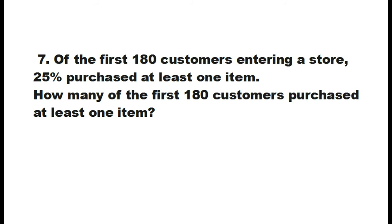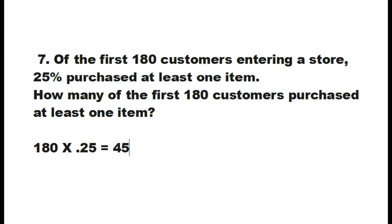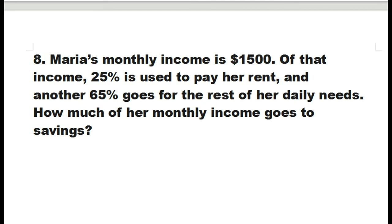Next, of the first 180 customers entering a store, 25% purchased at least one item. How many of the first 180 customers purchased at least one item? So, 180 times 0.25, which is 25%, equals 45. So, there were 45 customers who purchased at least one item.